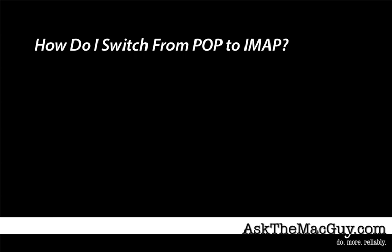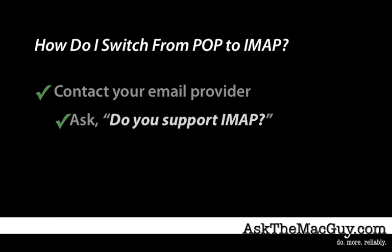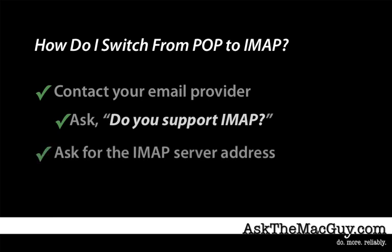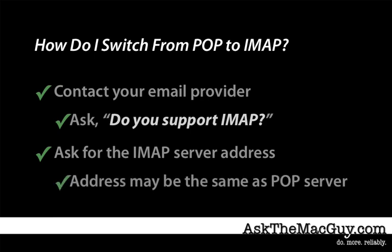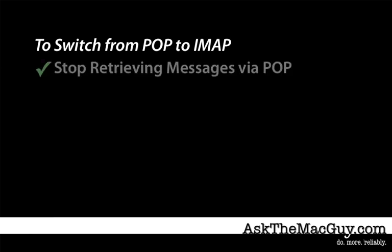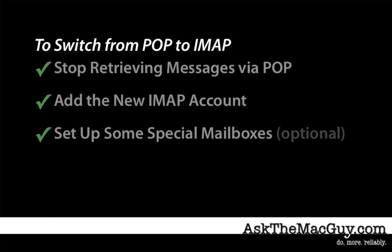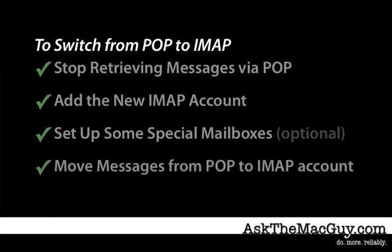I'm ready. What do I need to do to switch to IMAP? To switch from POP to IMAP, we'll be performing the following steps: configure mail to stop retrieving messages with the POP account, add the new IMAP account, set up some special mailboxes, move messages from the POP account to the IMAP account, and finally, disable the POP account.